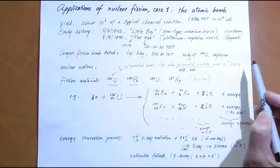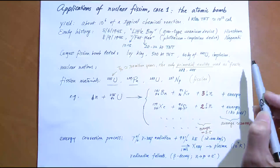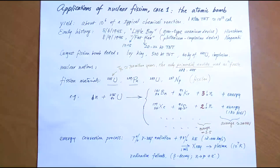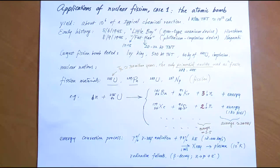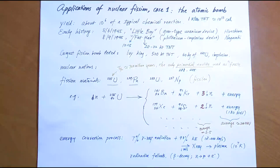Today, there are several declared nuclear nations in the world, plus a few smaller nations that also have nuclear weapons. All five permanent members of the UN Security Council are declared nuclear nations, plus a few others: India, Pakistan, Israel (probably), and North Korea. Iran is also currently in the news for possibly building a nuclear bomb.